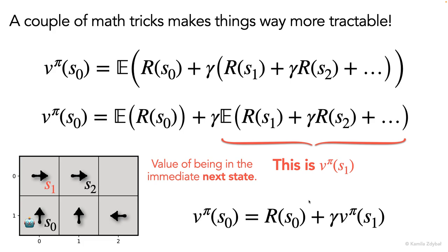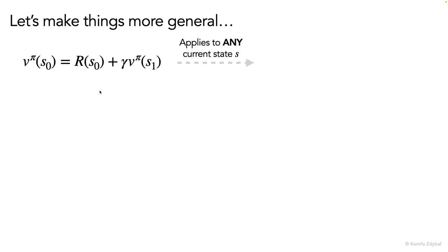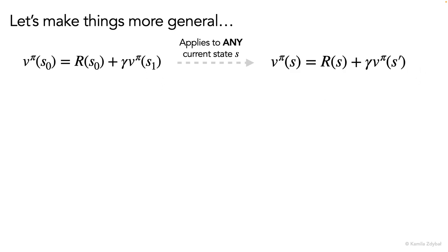So stay with me for just a little longer. We'll make things a bit more general, and we've arrived at this equation. I'm just going to change the notation a little bit so that this is valid for any current state and its immediate next state. I will rewrite this equation by swapping s zero for s, just to make it more general, and swapping s one for s prime, s prime being the immediate future state.